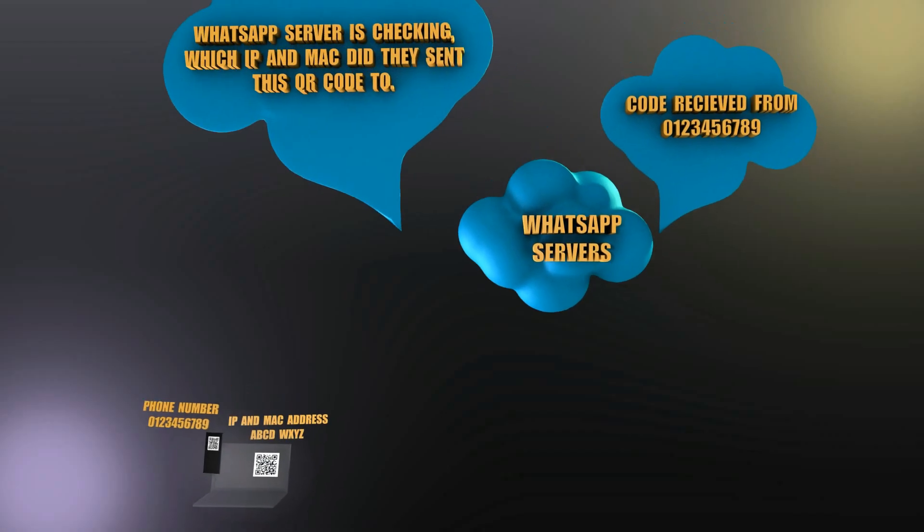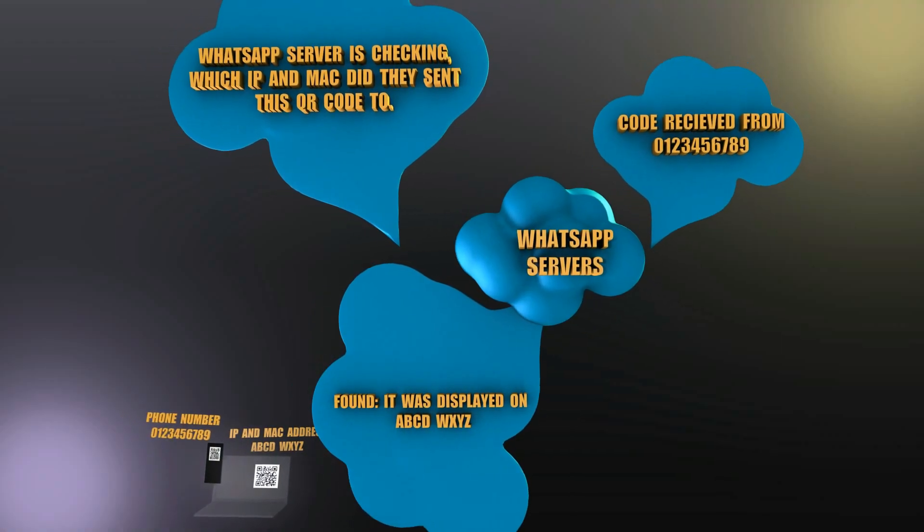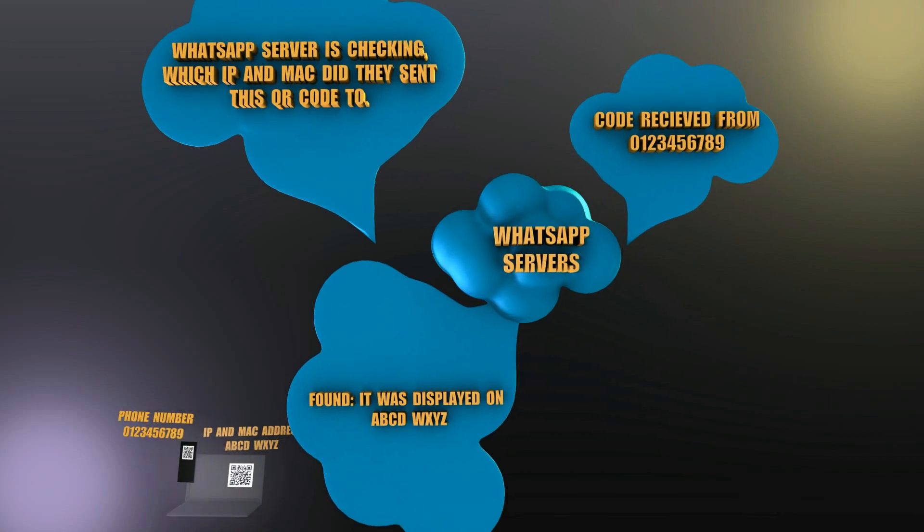WhatsApp already knows your ID because your phone number is registered, and your phone just sent this code to WhatsApp using your phone number. So WhatsApp now knows that your phone number sent the QR code. It then checks where on earth this code was displayed — on which desktop — because that code was also generated and displayed by the WhatsApp server. That desktop has a specific IP address and MAC address, and the WhatsApp server has all that information.